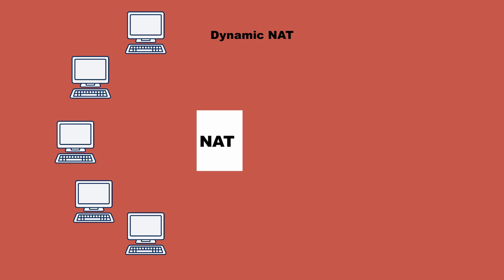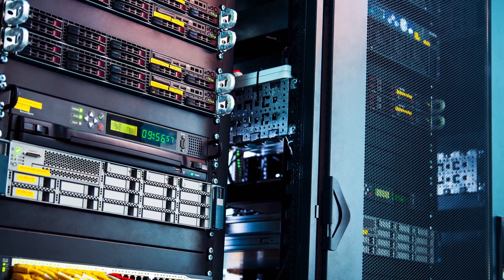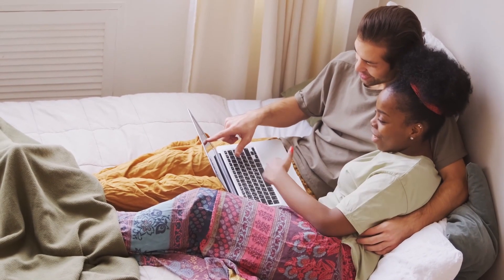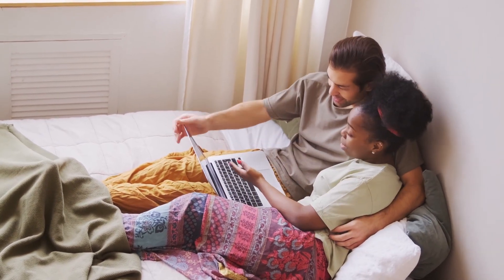Dynamic NAT fixes the prior shortcoming to an extent. Instead of having just one public IP address for a network, Dynamic NAT offers a block of addresses. Addresses are still translated on a one-to-one basis, but now with a pool of public addresses to choose from, multiple local devices can connect publicly at the same time — a number equivalent to the size of the pool. This method is still a viable solution today, especially for large networks, but it is also expensive and can be overkill for smaller networks like those in our homes. And it still does not fully solve the problem.